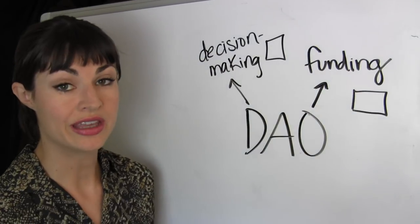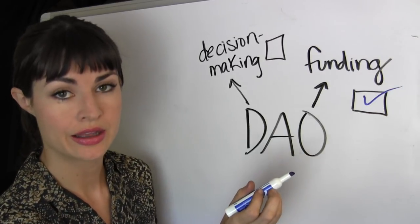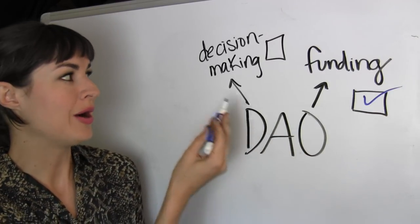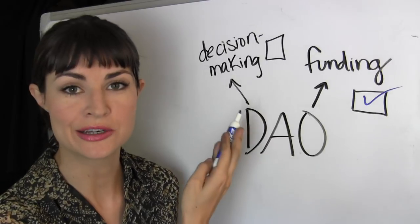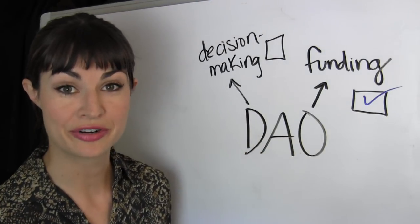So with the funding of our DAO taken care of, check, how do we go about making network-wide decisions when nobody is in charge? That's a new and different concept, huh?